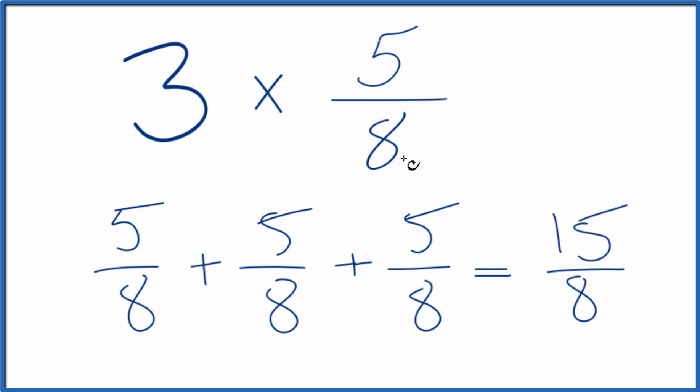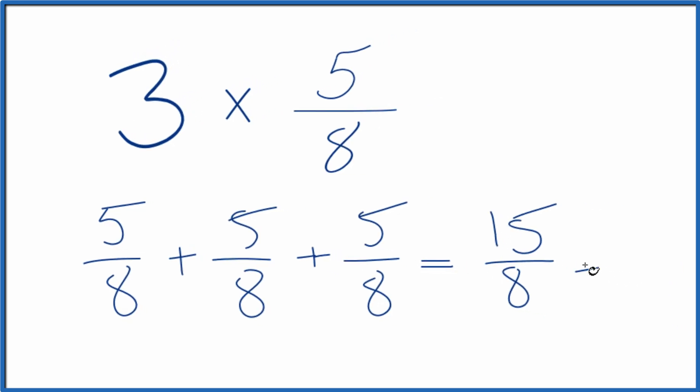So 3 times 5 eighths does equal 15 eighths. This is an improper fraction because the numerator is larger than the denominator, so we could change it to a mixed number.